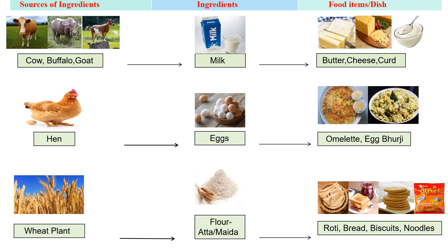Let's take some more examples to understand sources of ingredients. Animals such as cow, buffalo and goat give us milk, and from milk we make products such as butter, cheese and curd. Similarly, hens give us eggs, and from eggs we make omelette, egg bhurji, etc. Wheat plant gives us flour or atta or maida, and from this we make roti, bread, biscuits, noodles, etc.